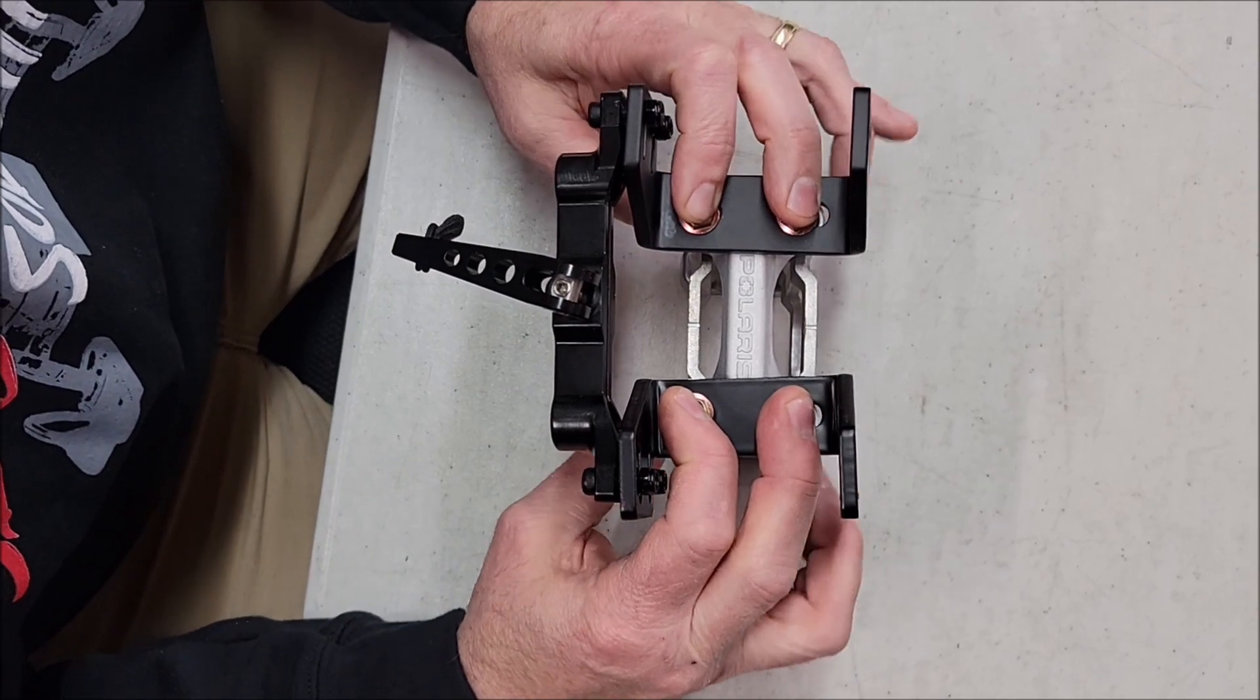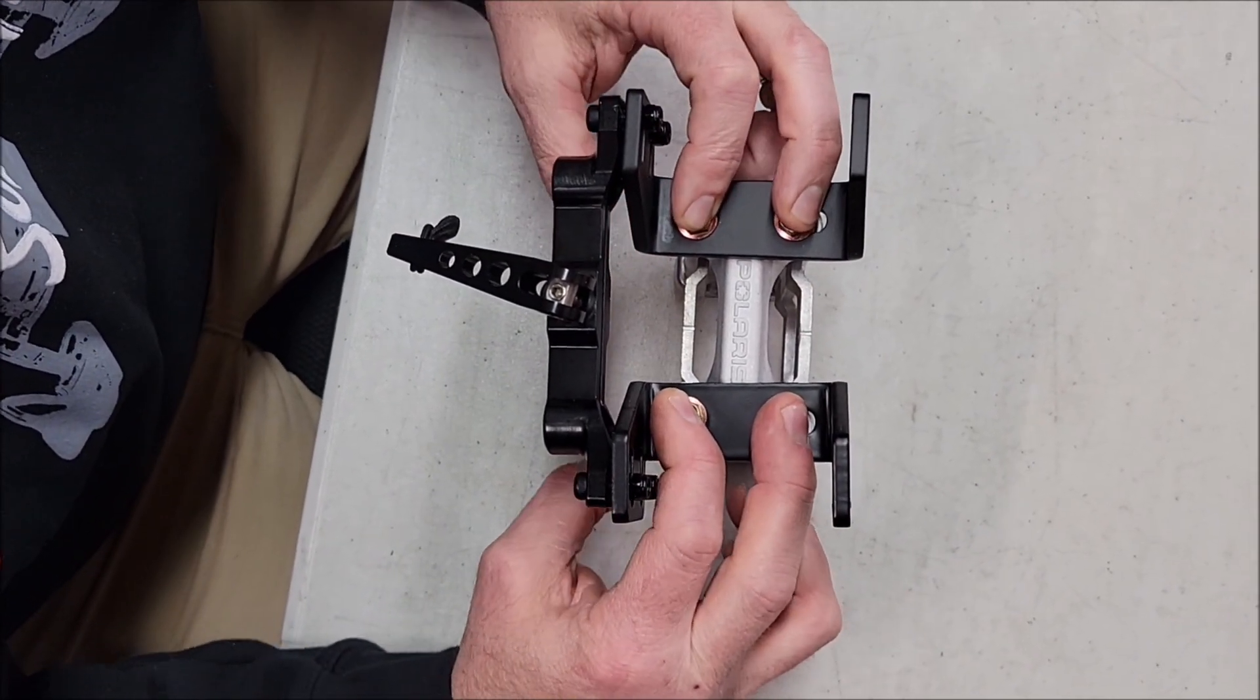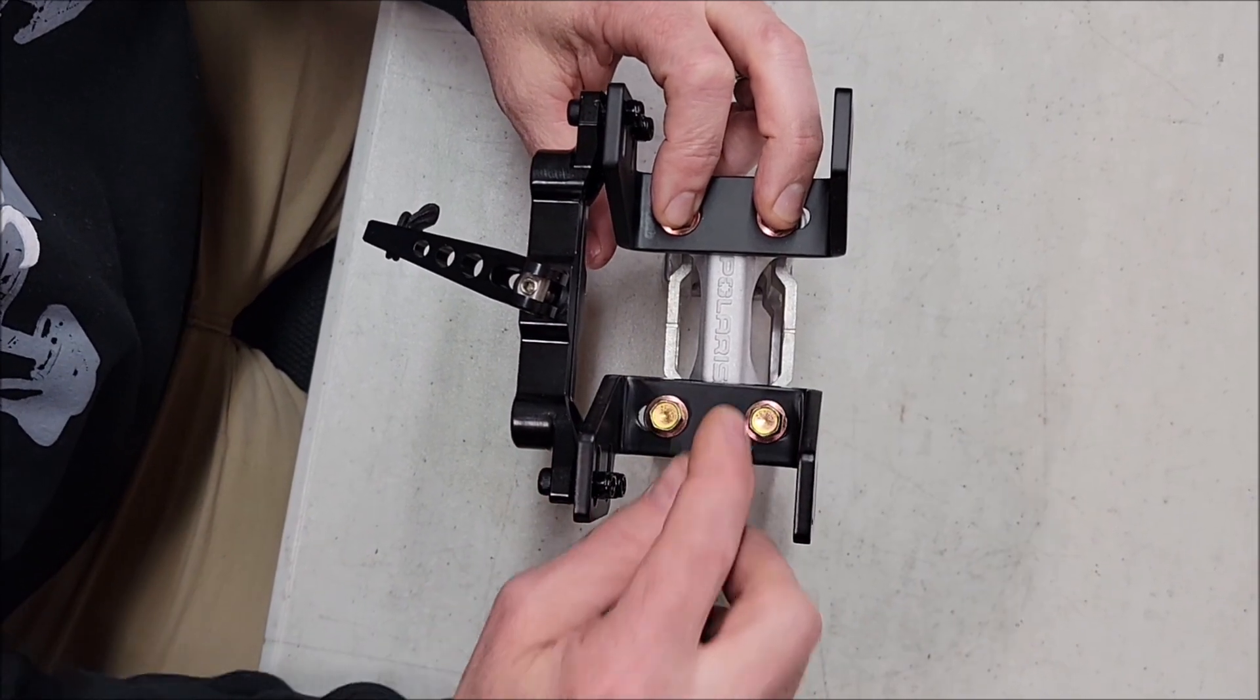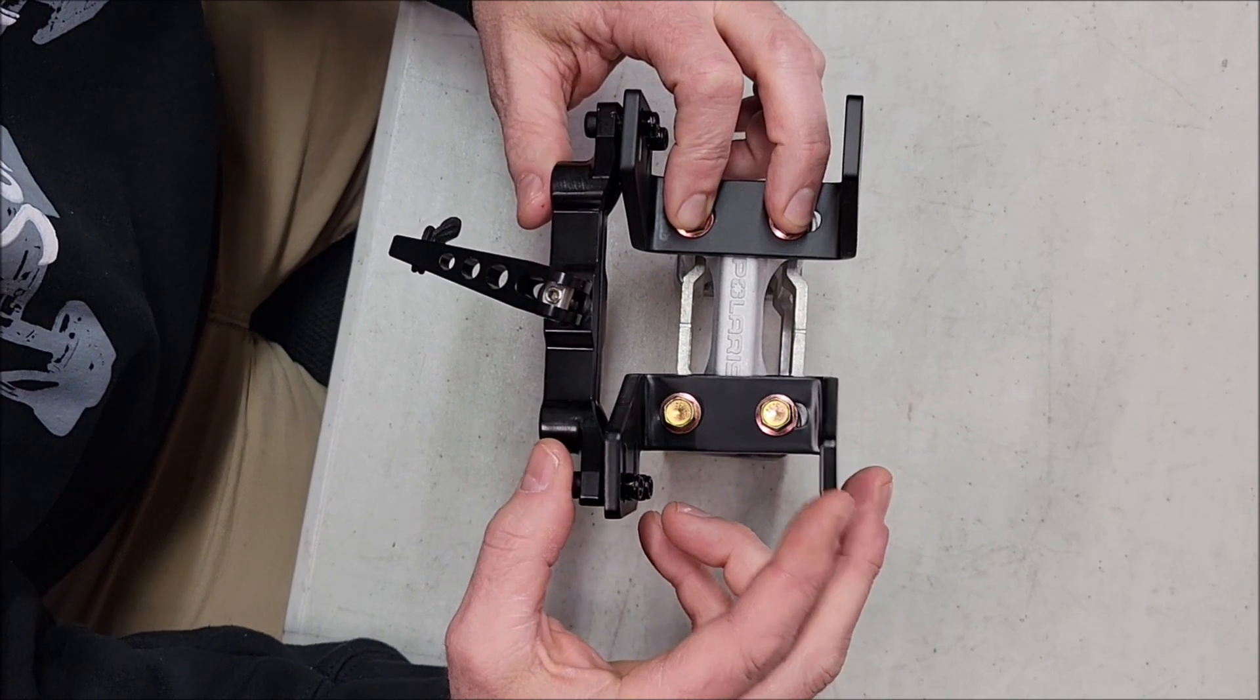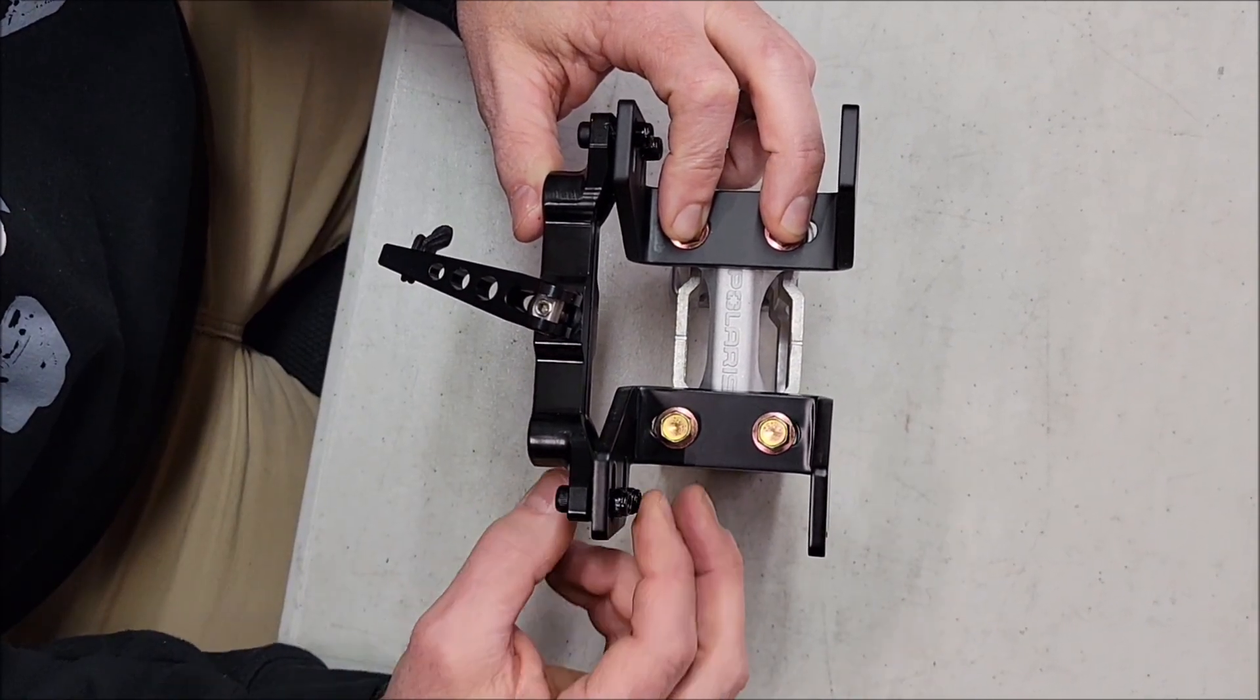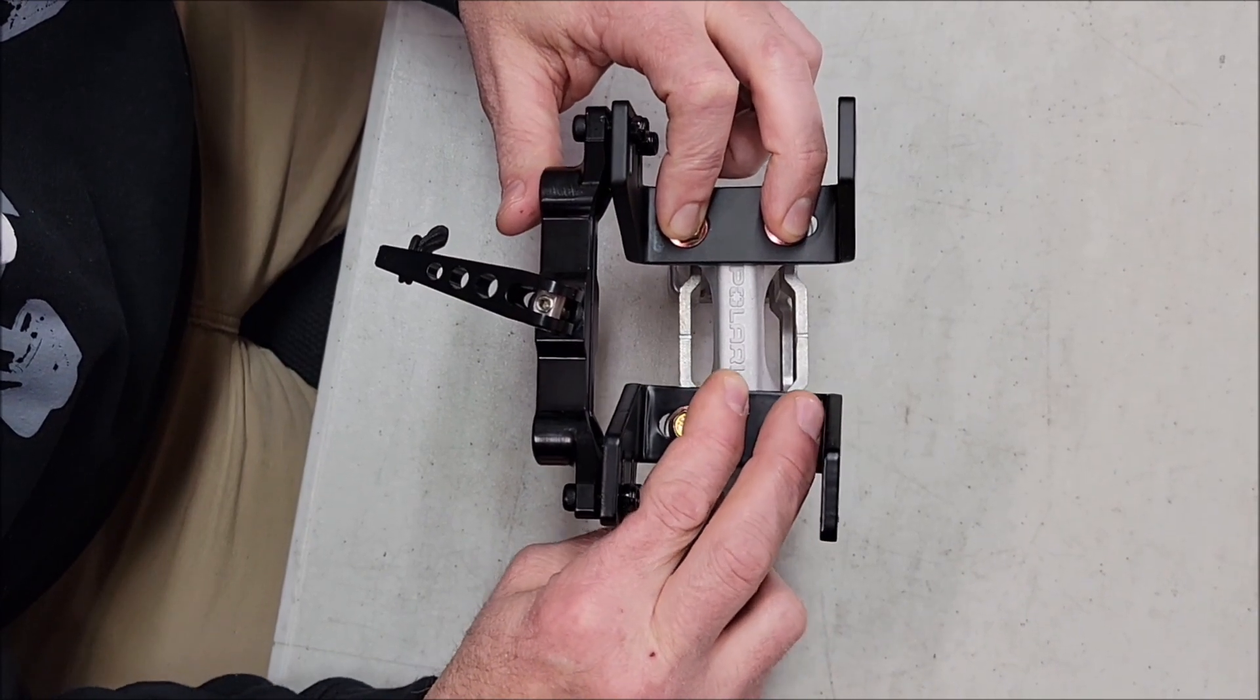This riser isn't the right riser so this is a different thread, but you get the idea. On your Matrix these will thread into the main riser. Once it's all lined up, then you tighten all these four bolts up here and you're pretty much good to go.